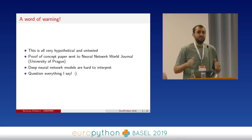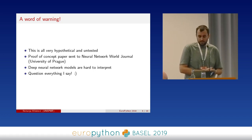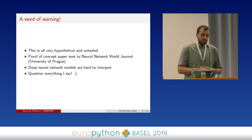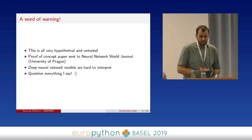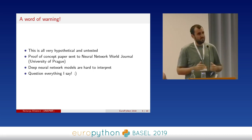Another word of warning: this is all very experimental, and I cannot claim with certainty that everything I'm telling you is true — it's true to the best of my knowledge. We sent a proof-of-concept academic paper to a neural network journal at the University of Prague, and I'm looking forward to their comments. They specialize in weird neural network models, among other things. I'm also looking forward to your comments — you can say this doesn't make sense at all, and I will agree with you. Deep neural network models are very hard to interpret: they may work, but we don't know why. So basically, don't believe me and question everything I say.